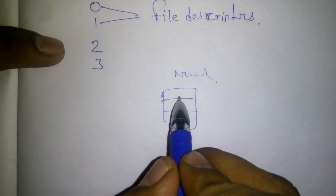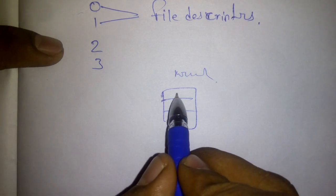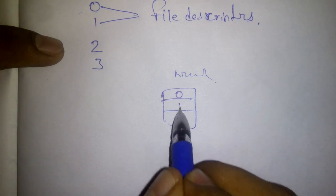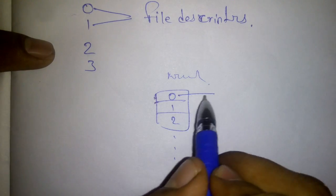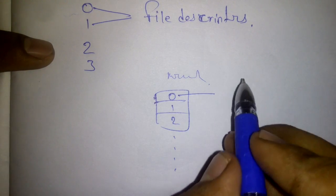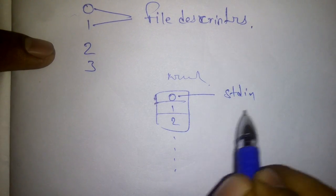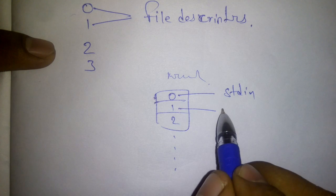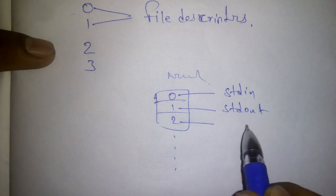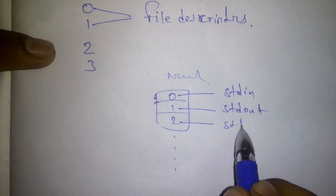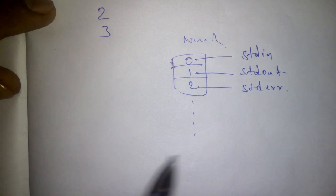This table consists of file descriptor numbers like 0, 1, 2, 3, and so on. File descriptor 0 represents stdin, file descriptor 1 represents stdout, and file descriptor 2 represents stderr.